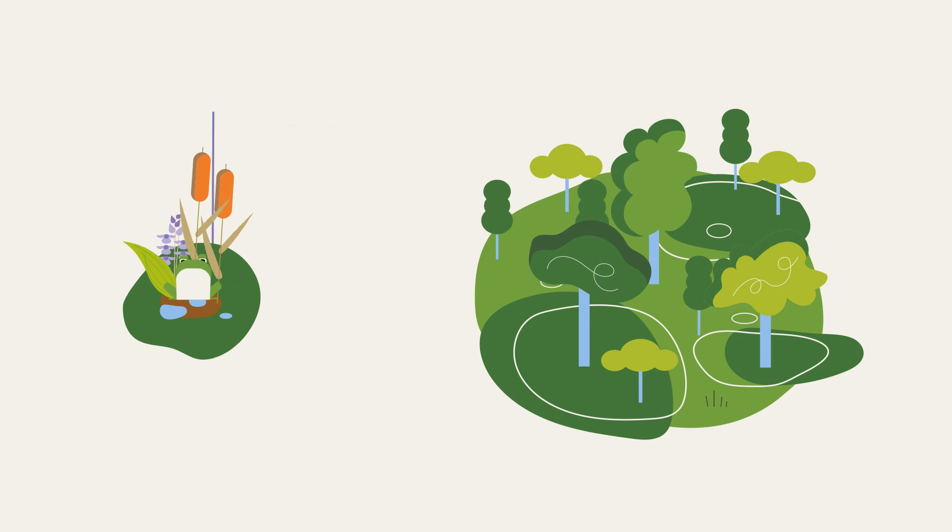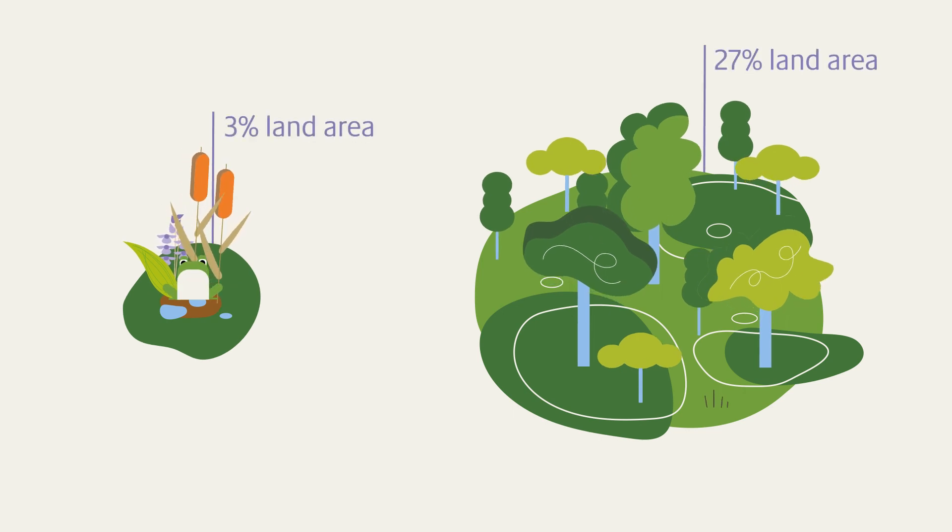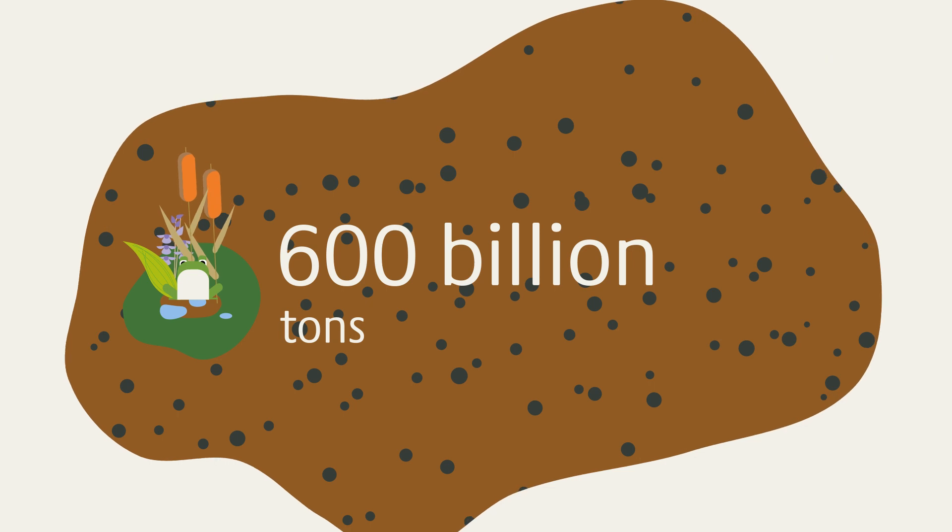The peatlands cover only about 3% of the world's land area. Nevertheless, they contain twice as much carbon as the total biomass of all the forests on Earth. An incredible amount.